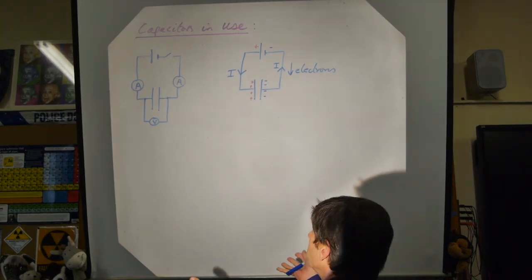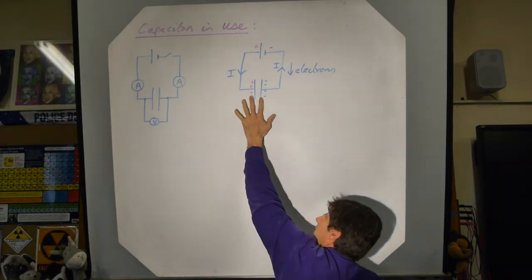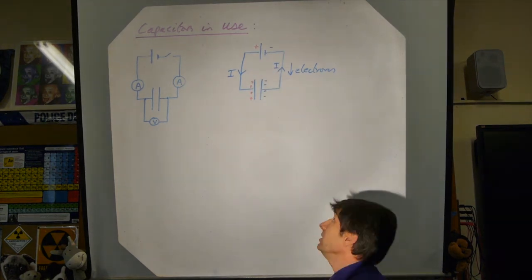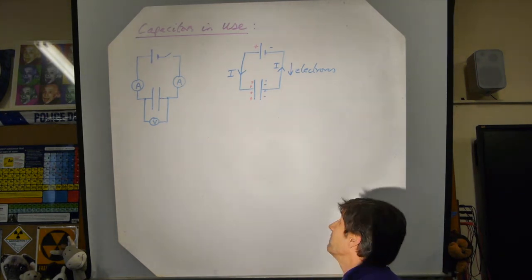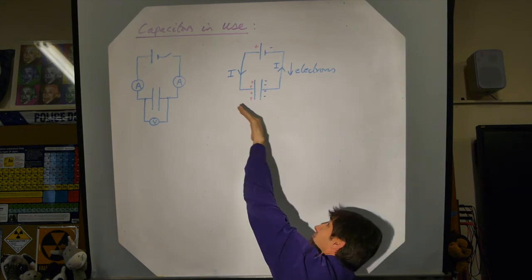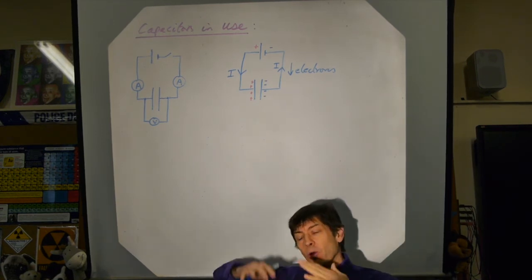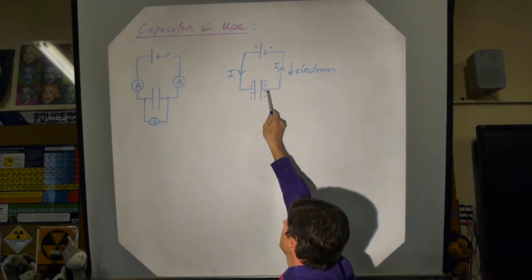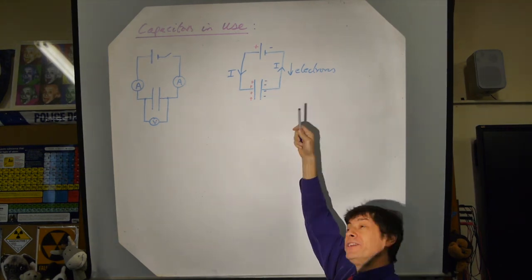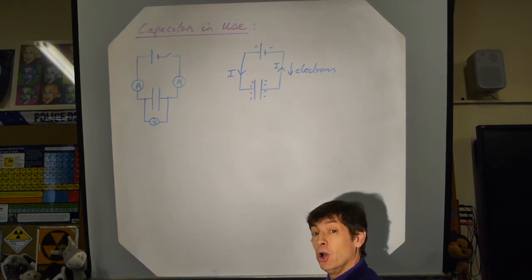The voltage across the capacitor starts at zero and builds up as charge accumulates. It keeps building until it equals the battery's EMF. At that point the battery is trying to push electrons one way but the capacitor's potential difference pushes them back the other way. An equilibrium is reached where no electrons are added or removed, and the current drops to zero. It is a time-dependent device.